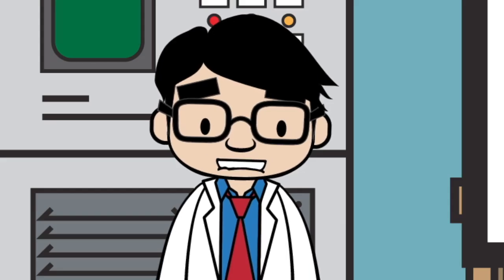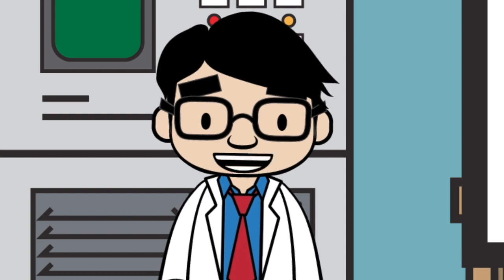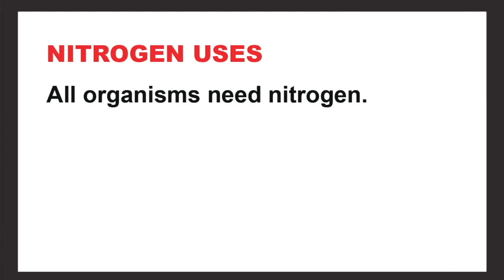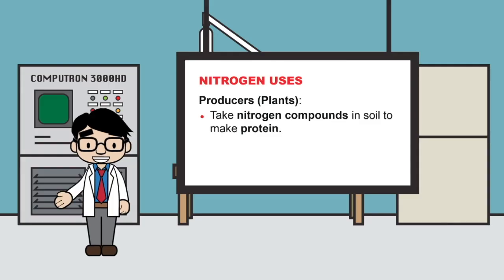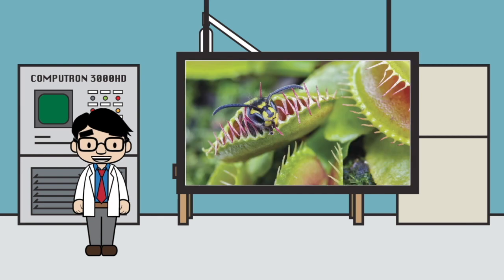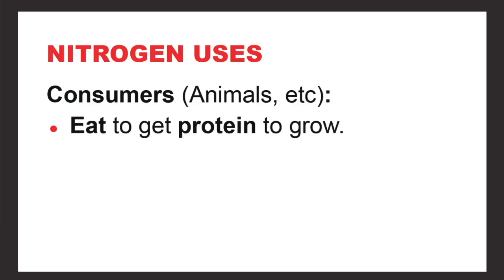The uses of nitrogen vary, but it's safe to say that all organisms need nitrogen. Producers, such as plants, take nitrogen compounds in the soil to make protein. However, if there's not enough nitrogen compounds in the soil, they will get their nitrogen by trapping other organisms, like the Venus flytrap, which leads us to consumers.